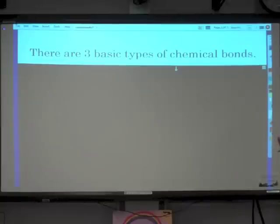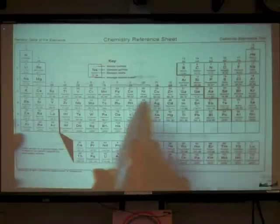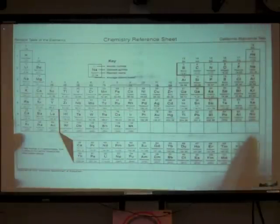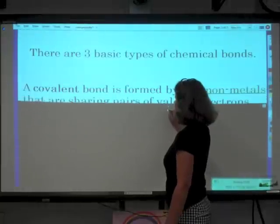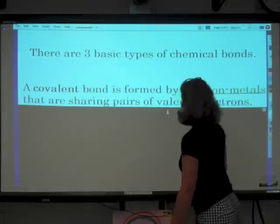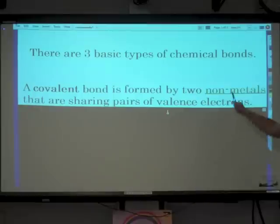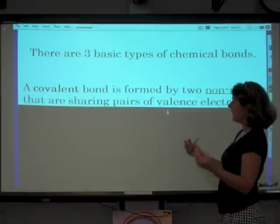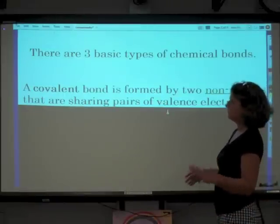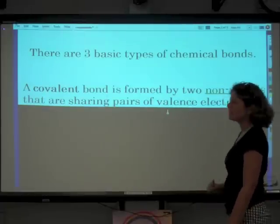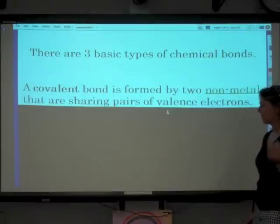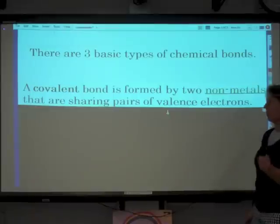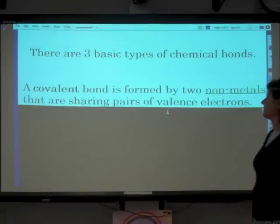Metals, non-metals. A covalent bond is formed by two non-metals. So that's a non-metal bonded to a non-metal. And the nature of that bond is that those two atoms, two or more, are sharing pairs of valence electrons. They might be sharing one pair of valence electrons, two pairs of valence electrons.